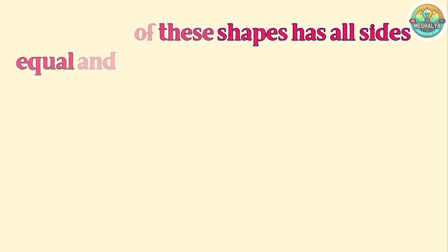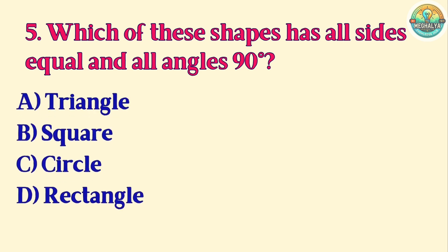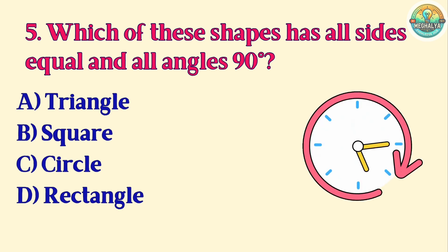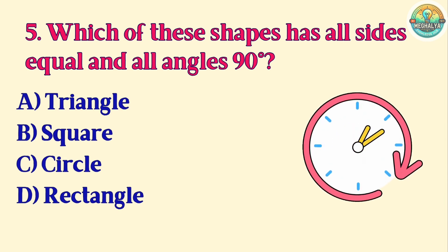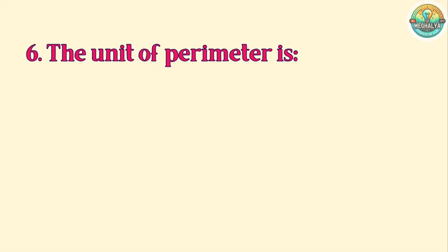Question 5. Which of these shapes has all sides equal and all angles 90 degrees? A. Triangle. B. Square. C. Circle. D. Rectangle. Correct answer is C.